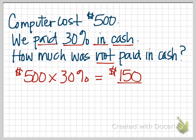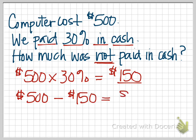But the question asks us how much was not paid in cash. So to get that answer, we will need to take away from the original amount, which was $500, the amount that we paid in cash, which was $150. So that gives us our answer of $350, and that's the amount that was not paid in cash.